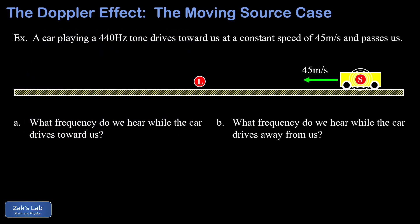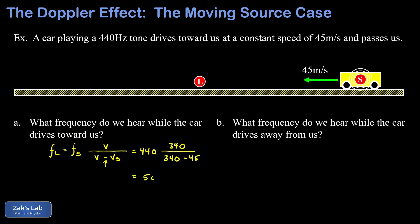In our next example, we have a stationary listener and a moving source: a car playing a 440Hz tone driving toward us at 45 meters per second. It will pass us and then drive away. For part A, what frequency do we hear while it's coming at us? We write down our new formula and pick the minus sign because the car driving at us compresses the wavelength. Plugging in: 440 times 340 divided by (340 minus 45), which gives about 507Hz.